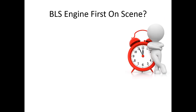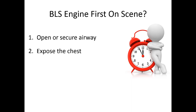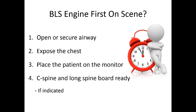What happens if the engine beats the rescue there and you only have BLS capabilities on scene? BLS can do a lot to get ready for ALS. You're absolutely capable of opening and securing the airway, whether it's an LMA or a jaw thrust. Expose the chest so you can get the monitor on and see whether a PEA is present. Put the monitor on, assess the rhythm. You can also think about controlling the C-spine and getting the longboard ready for a load-and-go situation if indicated.